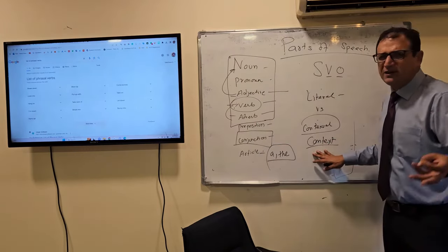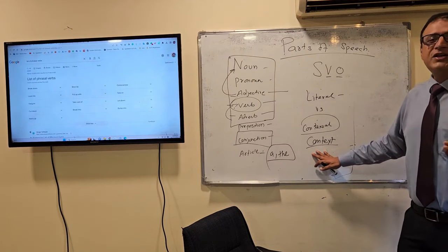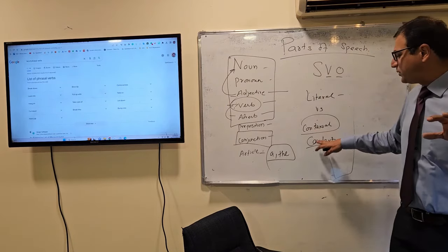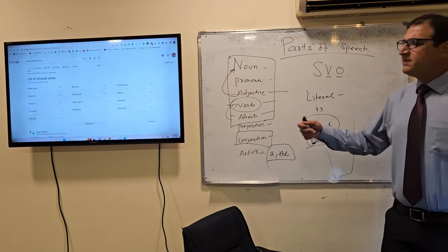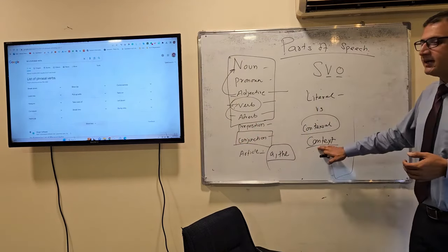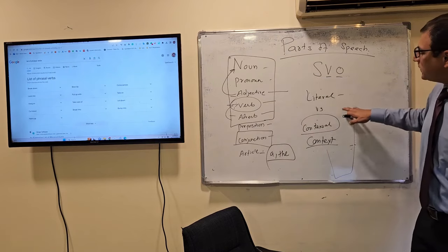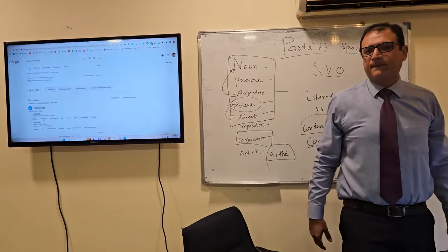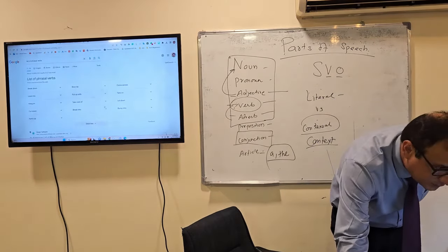This is called context — words change their meaning according to the context. In advanced English, all words are used in their contextual meanings. For example, 'heavy rain' — 'heavy' somehow suggests physical weight, but you understand the idea. Phrasal verbs are not used in their literal meanings either. 'Hang on' has nothing to do with hanging — it means 'wait,' 'be patient.' These are called phrasal verbs.